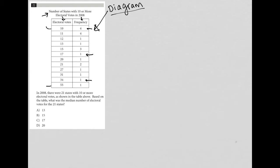The question says: in 2008 there were 21 states with 10 or more electoral votes. So if I added all the frequency numbers together from the table above, that should represent 21. Based on the table, what was the median number of electoral votes for those 21 states?